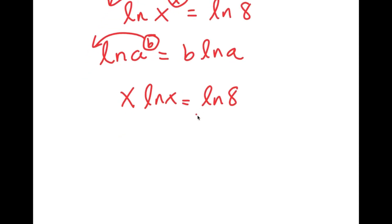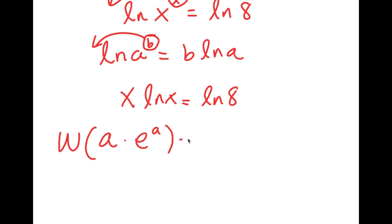From here, I'm going to use another formula that states that if I have something in the form W of a times e to the power of a, this is equal to a. This is something known as the W Lambert formula. So if I take the W of something in the form a times e to the power of a, it's going to equal a.